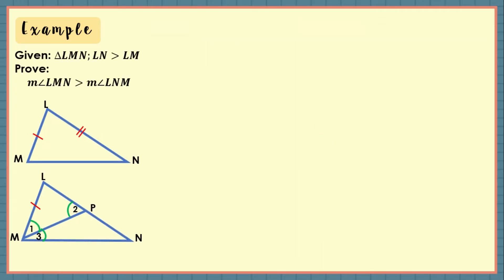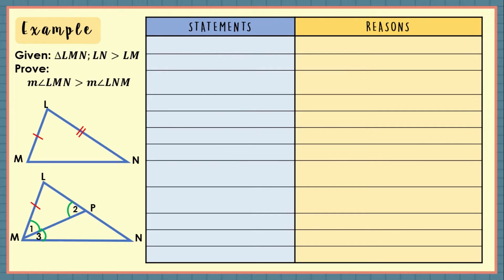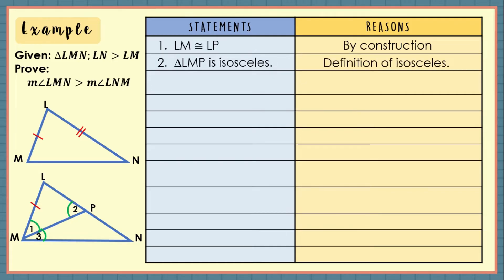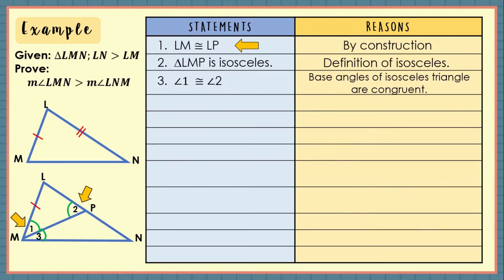We can now prove this using the two-column proof. For our first statement, LM is congruent to LP based on the additional construction we have made on the figure. Next, using statement number 1, triangle LMP is isosceles since sides LM and LP which are congruent are its legs — that defines an isosceles triangle. Number 3, since LM is congruent to LP, we can say that angle 1 is congruent to angle 2 since the base angles of an isosceles triangle are also congruent.